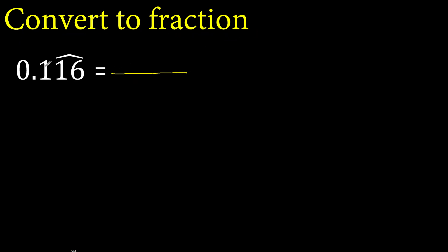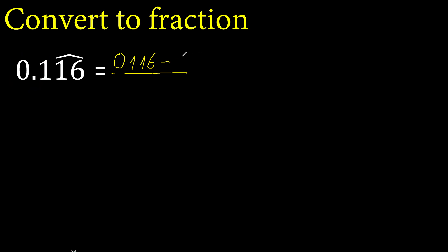First, the number without point or symbol. Minus the number outside the symbol: 0, 1, without point, like this.